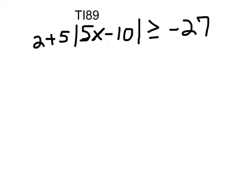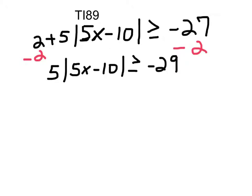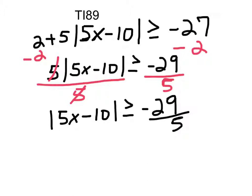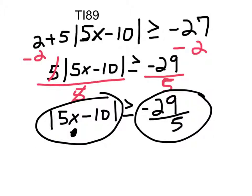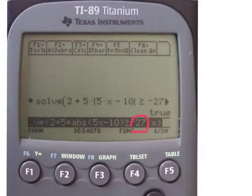We would have two plus five times the absolute value of 5X minus 10 is greater than or equal to negative 27. Let's solve this. We will subtract two from both sides. That will give us five times the absolute value of 5X minus 10 is greater than or equal to negative 29. Divide both sides by five. These fives cancel. So we have the absolute value of 5X minus 10 is greater than or equal to negative 29 fifths. Whatever value we put in for X, we are always going to get something greater than this negative number, because this absolute value is always going to return a positive number. So if you plug in negative 27 into the calculator for this inequality and hit enter, you are going to get the answer true, which means that any number you put in for X is going to be greater than the negative 27.